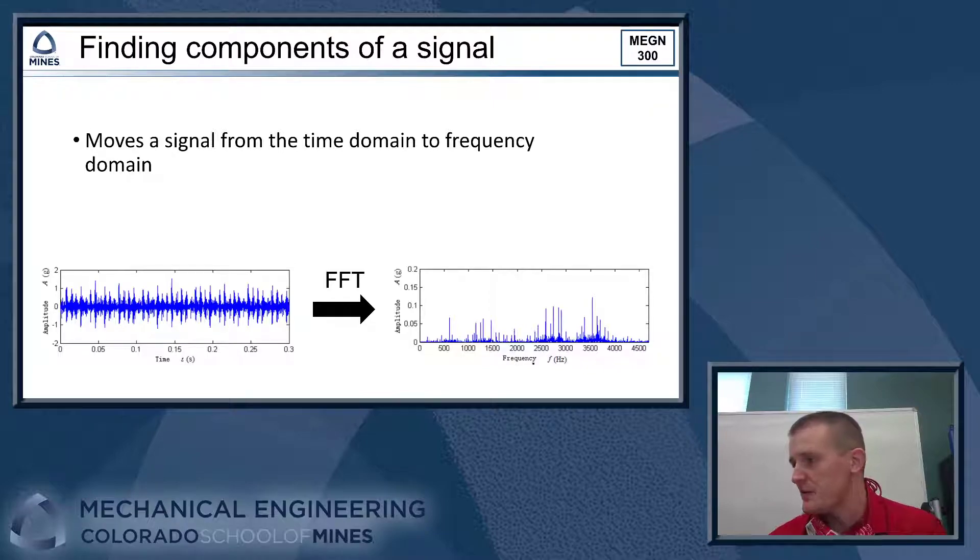So the key idea here is the Fourier transform is moving our signal from the time domain to the frequency domain, which is a fancy way of saying if you look at the graphs that result from this when we take our raw signal where it has an amplitude and it's varying in time. So we have amplitude on the y-axis and we have time on the x-axis.